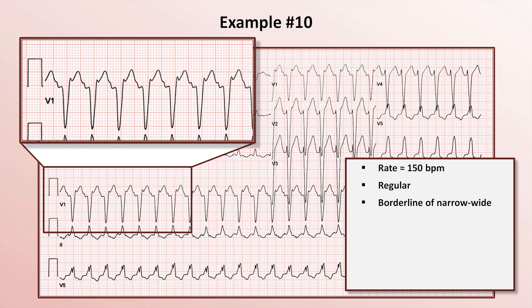Not only is there regular, consistent atrial activity at the tail end of each T-wave, there is also a tiny bump at the very beginning of the ST segment. If you assumed that this was part of the QRS complex, that's completely understandable.